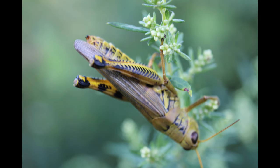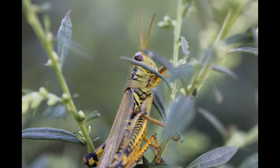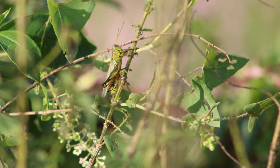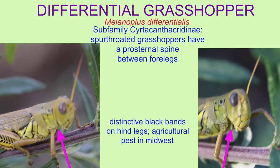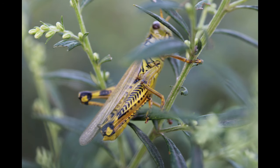The tympanum is on the first abdominal segment, and the ovipositor is short compared to, say, katydids and crickets. Differential grasshoppers are classified in the subfamily of spur-throated grasshoppers because of a prosternal spine between their forelegs on the underside.